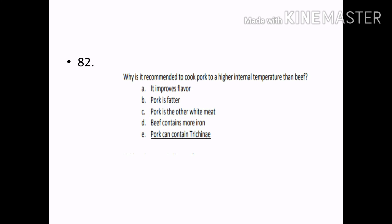Why is it recommended to cook pork to a higher internal temperature than beef? Options — It improves flavor, pork is fatter, pork is the other white meat, beef contains more iron, pork can contain trichinae. Correct answer: Option E — Pork can contain trichinae.